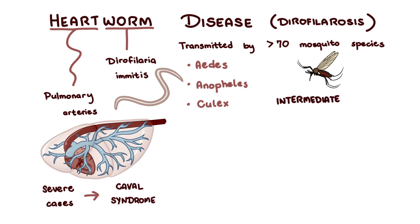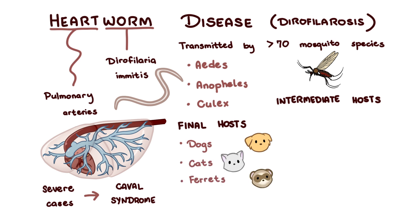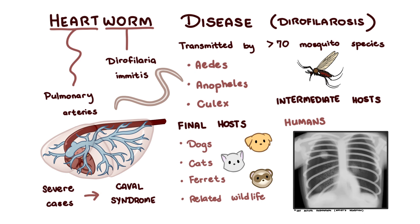These mosquitoes are the intermediate hosts. The final hosts of the parasite include the domestic dog, cat, and ferret, and some related wildlife. This video will primarily be focused on the domestic dog. Humans can also be infected, but you don't have to worry because they're often asymptomatic. The dead larvae may be seen in radiographs and are important medically because they can look like lung cancer — they're called coin lesions, but they're harmless and may ring a false alarm for lung cancer.